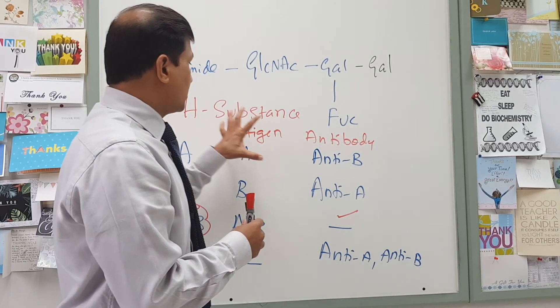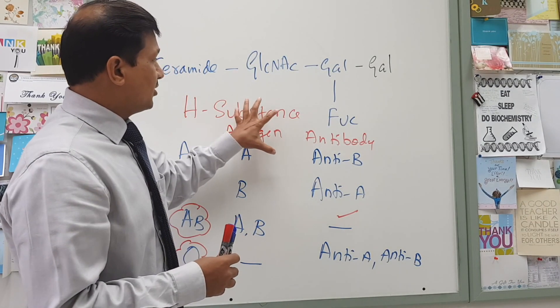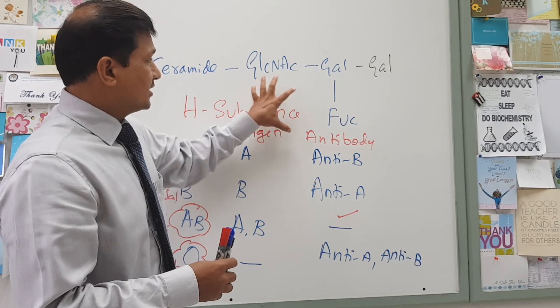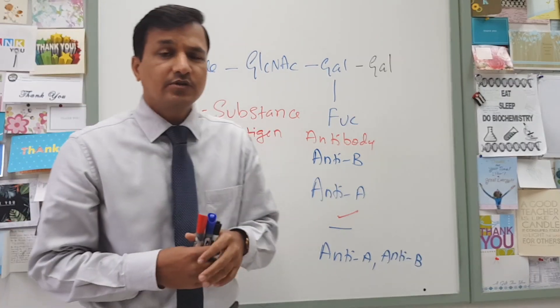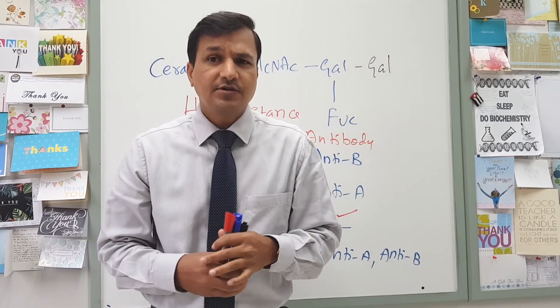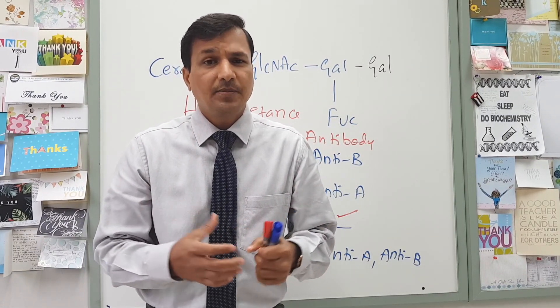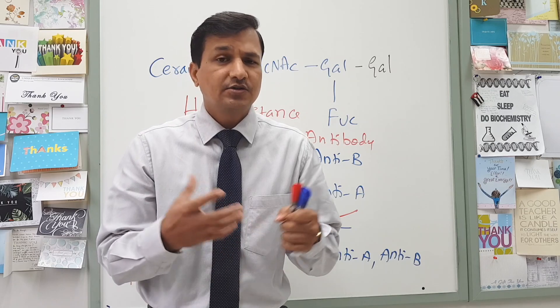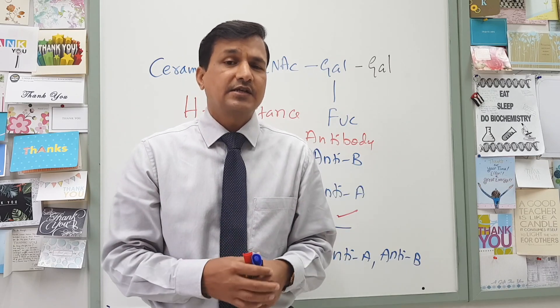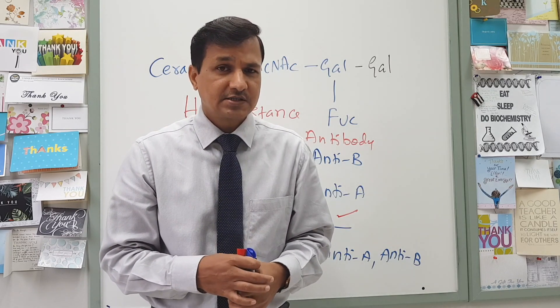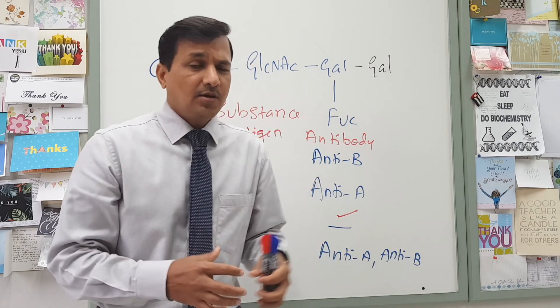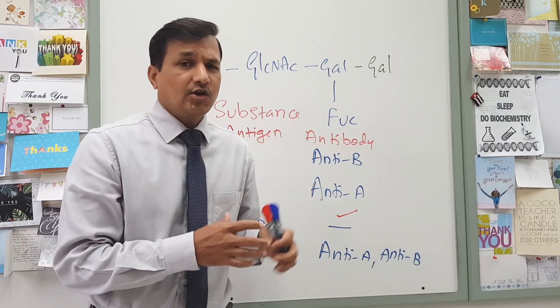So this is all about the carbohydrate antigen present on red blood cells, which is basically a lipid — a glycolipid molecule. It is acting as an example of a glycolipid for us. This is all about glycolipids.